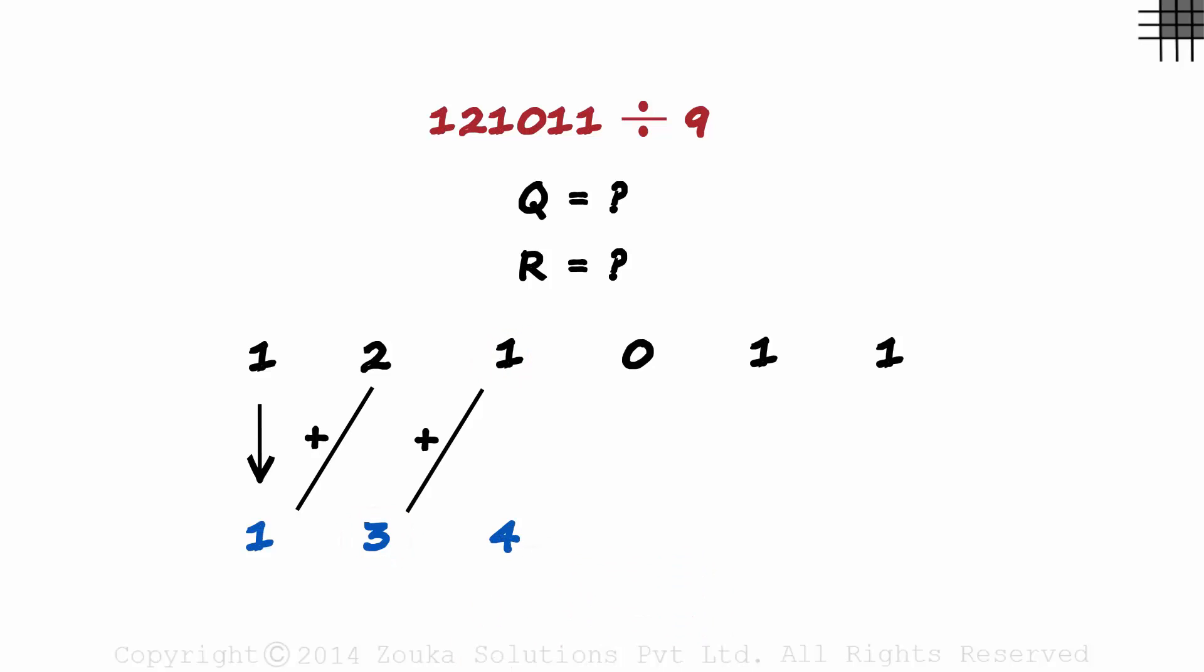Let's review the steps. First digit copied, added it to the second digit to get a result, then added the result with the third digit to get 4.